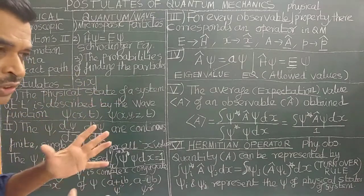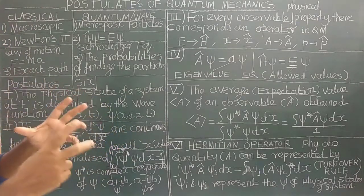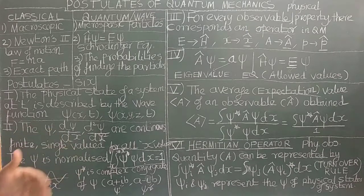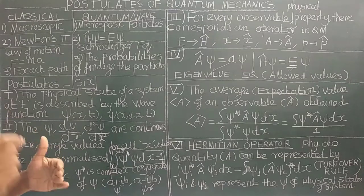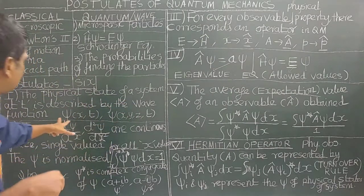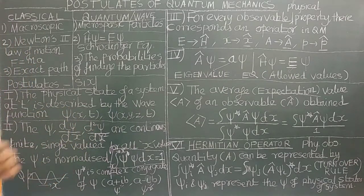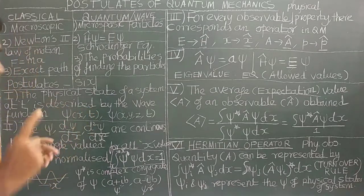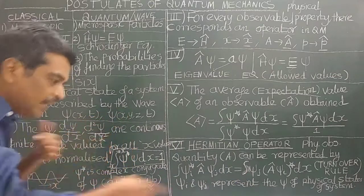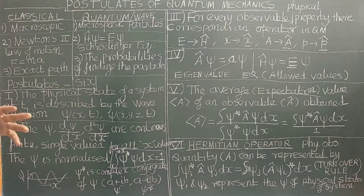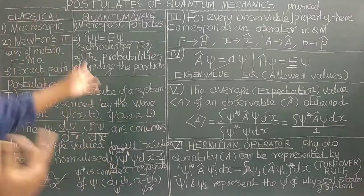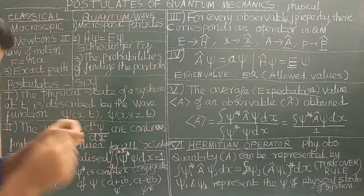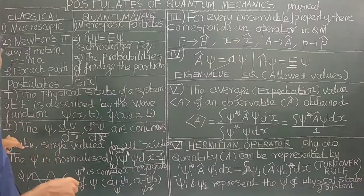The first postulate: the physical state of a system at any time point t is described by the wave function psi. Psi is a wave function used to describe the physical state of a system. Psi is a function of position and time. For a particle moving in one dimension, psi is a function of x and t. For a particle moving in three dimensions — x, y, and z — the wave function is used to describe the motion of the electron or microscopic particle. We need the x, y, and z coordinates and also the particular time to describe where the particle is present.